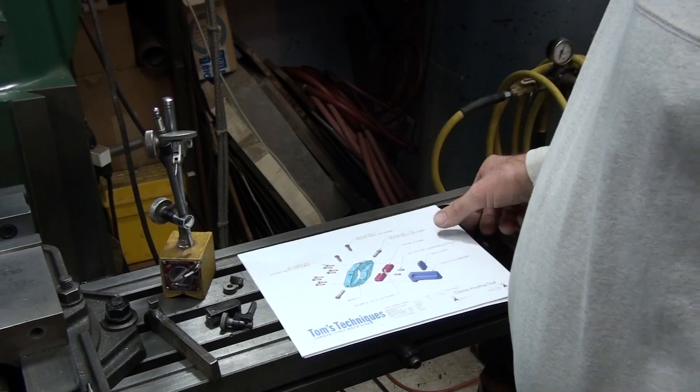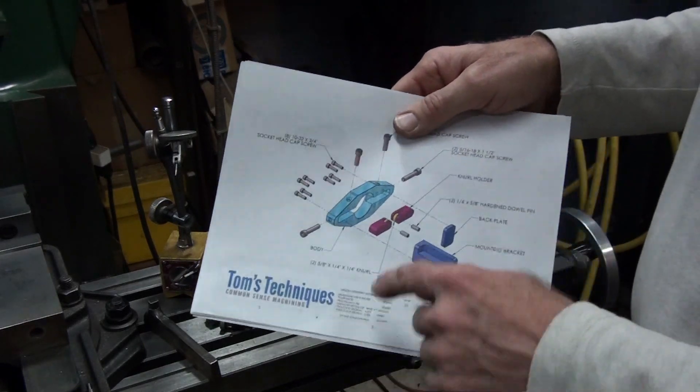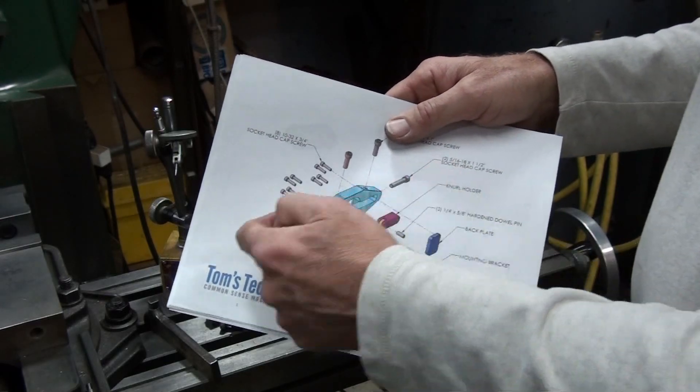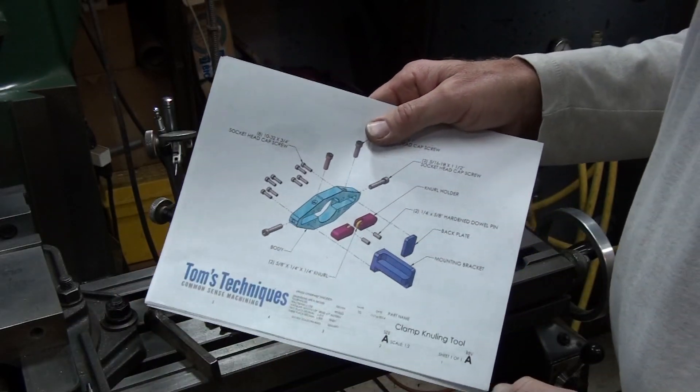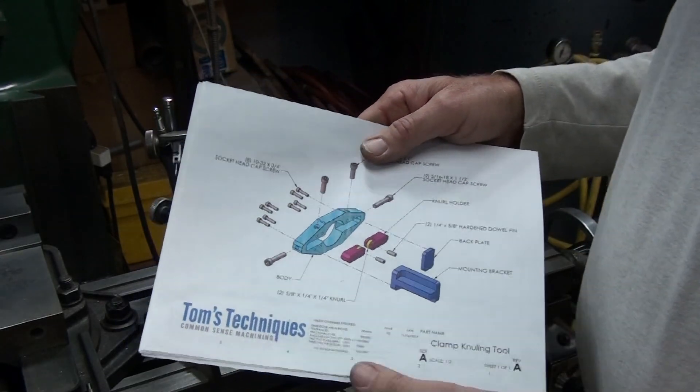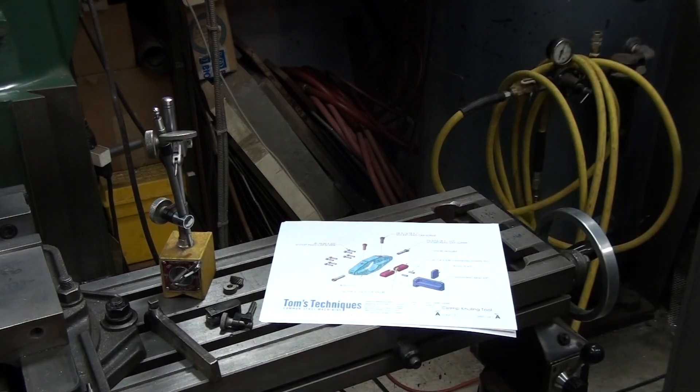The best knurling tool I found is a clamp-type knurling tool. It uses a frame to hold the knurls and two opposing screws to force the knurls into the work. This makes a real rigid setup and it does a really good job at knurling.